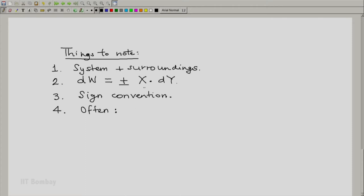X here is an intensive property of our system, whereas the second component dY, in which Y is involved, Y is an extensive property.